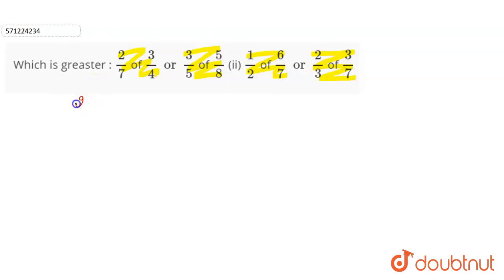So first part is 2 by 7 of means multiply 3 by 4, or 3 by 5 of means multiplication 5 by 8. Firstly, let's make it in the simplest form. So 2 into 1 is 2, 2 into 2 is 4. So 3 into 1 is 3, 7 into 2 is 14.